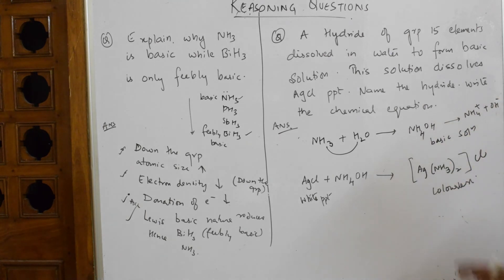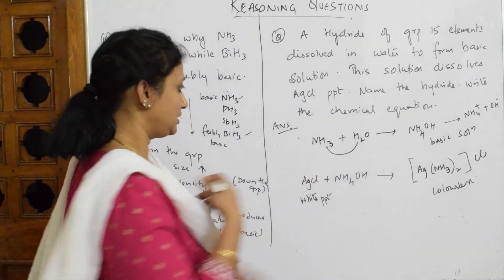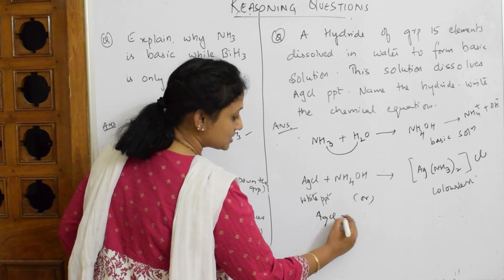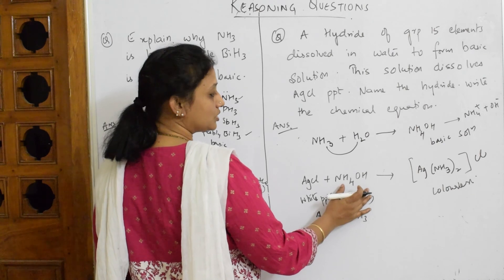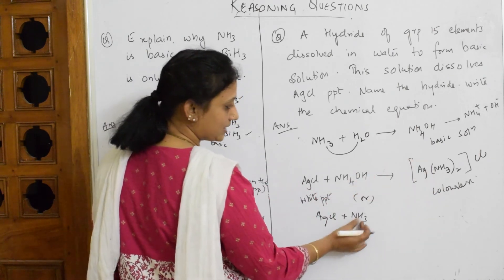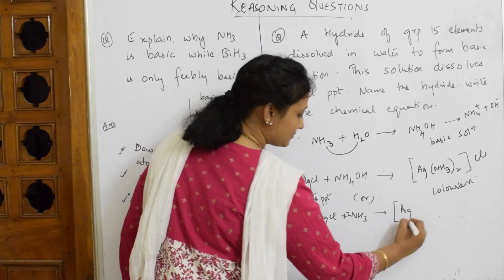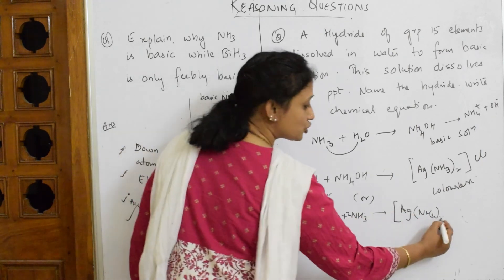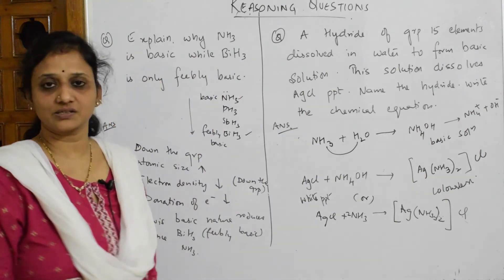Name the hydride and write the chemical equation. You can also write this reaction directly: if you're confused where the ammonia came from, take the hydride directly. Take two moles of hydride with silver chloride. Form the ligand in brackets: [Ag(NH3)2]+ and the leftover chloride. This is again a complex ion which is colorless.